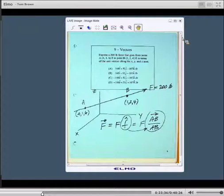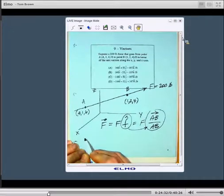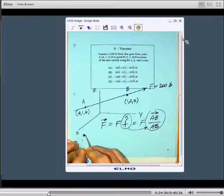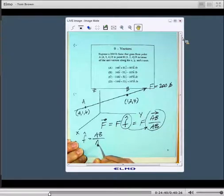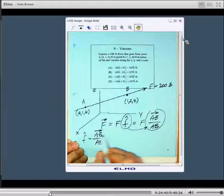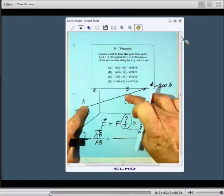Let's get the unit vector first. F is equal to AB divided by the magnitude of AB, and this arrow goes all the way across A and B because it means the vector AB. We're going to take the coordinates of B and subtract the coordinates of A.